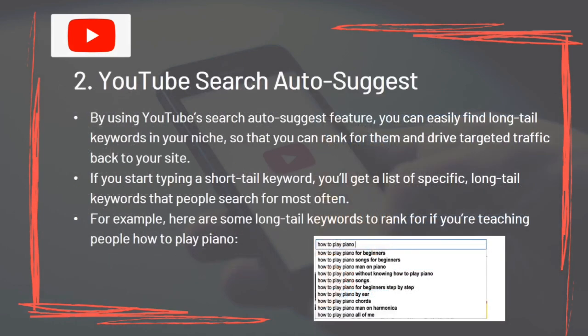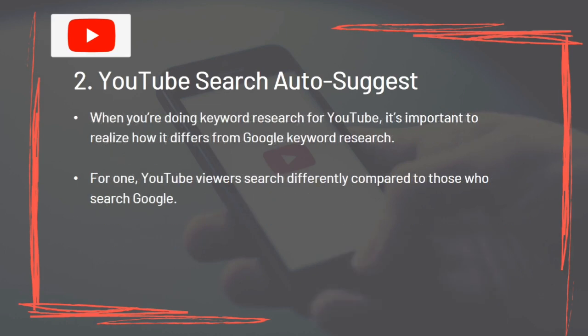Tool 2: YouTube Search Autosuggest. By using YouTube's Search Autosuggest feature, you can easily find long-tail keywords in your niche to rank and drive targeted traffic. If you start typing a short-tail keyword, you'll get a list of specific long-tail keywords that people search for most often — for example, long-tail keywords for teaching people how to play piano. It's important to realize how YouTube keyword research differs from Google keyword research, as YouTube viewers search differently.